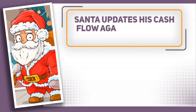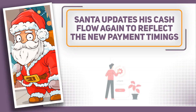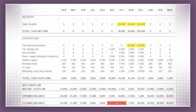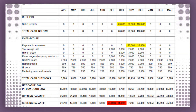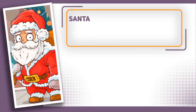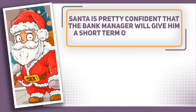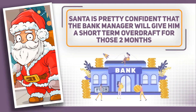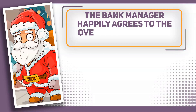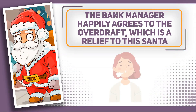So Santa once more updates his cash flow to reflect these new payments, and he's pleased to see that it's made a really big difference to his cash flow forecast. He's now forecasting to have a positive cash balance in every month apart from September, where his predicted cash balance is minus £4,800, and October, where his predicted cash balance is minus £1,050. Santa is pretty confident that the bank manager will give him a short-term overdraft for these two months, and he makes an appointment. He takes the cash flow forecast he's prepared and explains what he's already done to deal with his cash flow problems. The bank manager happily agrees to the overdraft, which is a big relief — this means Santa can pay all of his bills when agreed, particularly the elves' wages. The last thing he needs is them walking out on strike at the busiest time of year.